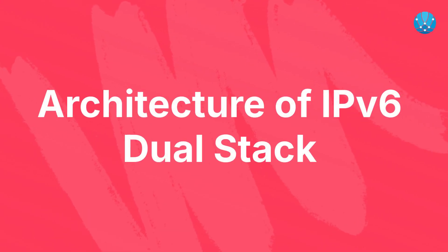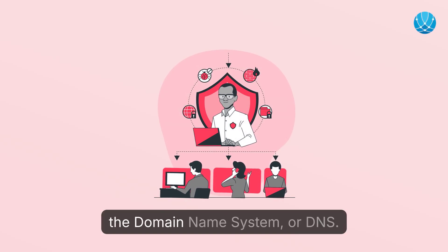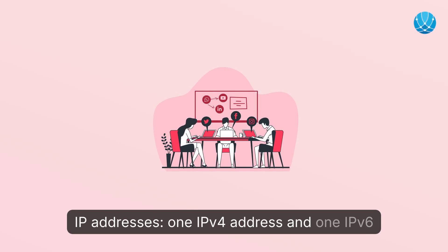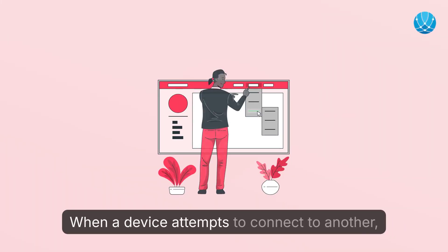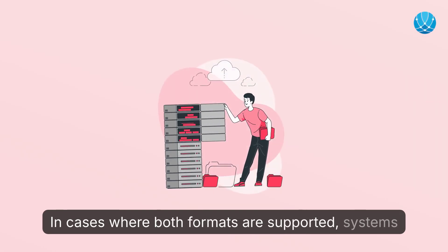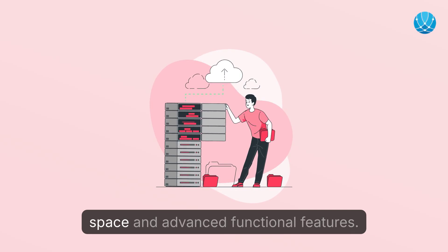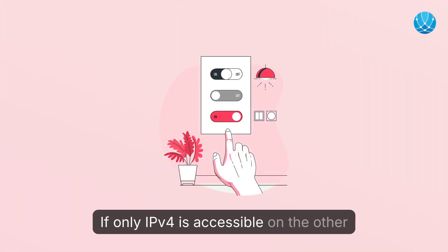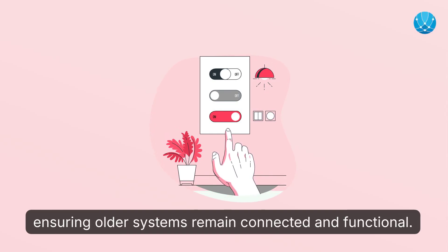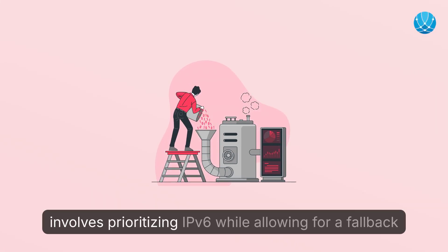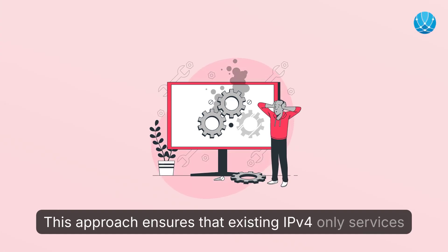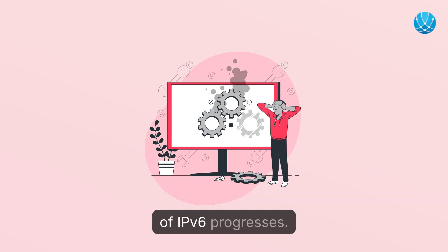The Dual Stack setup is fundamentally driven by the domain name system, or DNS. Within this architecture, each device is assigned two IP addresses — one IPv4 address and one IPv6 address. When a device attempts to connect to another, it first checks which IP version is available on the destination device. In cases where both formats are supported, systems typically prefer IPv6 due to its larger address space and advanced functional features. If only IPv4 is accessible on the other end, the system will automatically default to IPv4, ensuring older systems remain connected and functional. Configuring network devices within a Dual Stack architecture involves prioritizing IPv6 while allowing for a fallback to IPv4 when necessary, ensuring that existing IPv4-only services continue to operate without disruption as IPv6 implementation progresses.